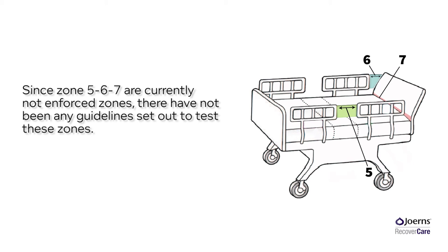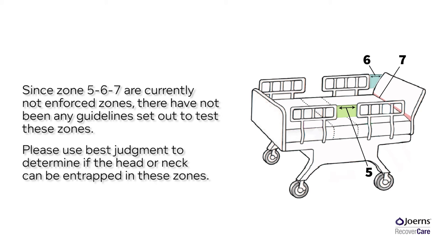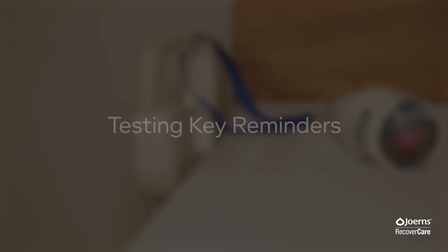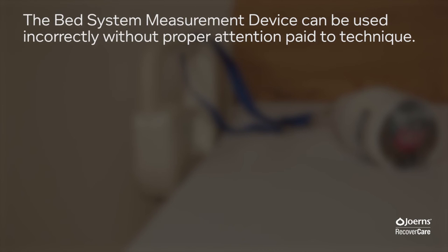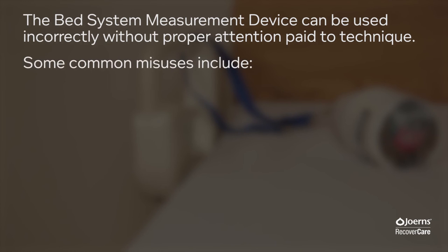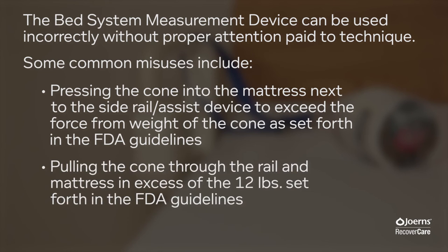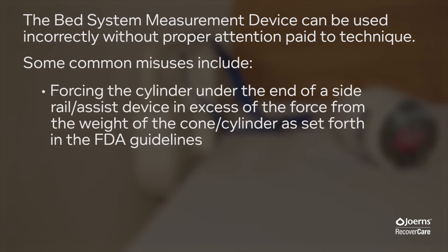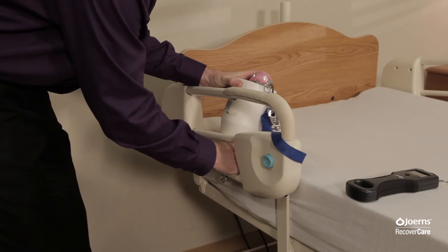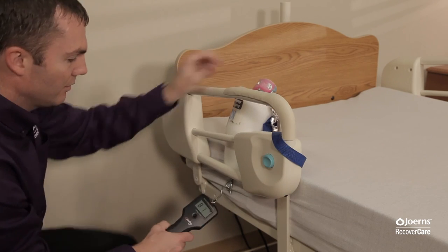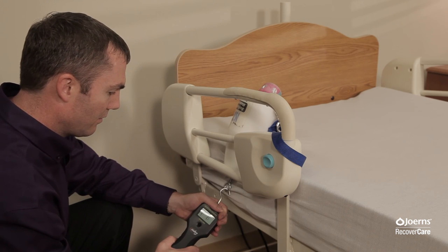Since zones 5, 6 and 7 are not currently enforced zones, there have not been any guidelines set out to test these zones. Please use best judgment to determine if the head or neck can be entrapped in these zones. Key test reminders: The bed system measurement device can be used incorrectly without proper attention paid to technique. Common misuses include pressing the cone into the mattress next to the side rail to exceed the force from the weight of the cone, pulling the cone through the rail and mattress in excess of 12 pounds, or forcing the cylinder under the end of a side rail in excess of the weight of the cone and cylinder as set forth in the FDA guidelines.